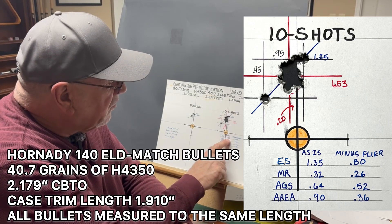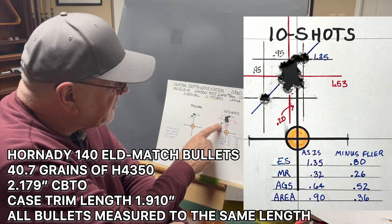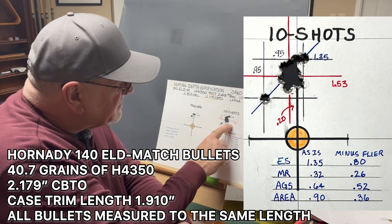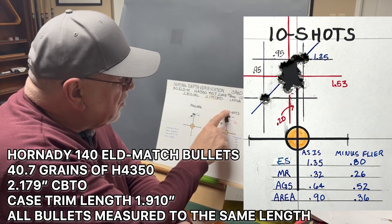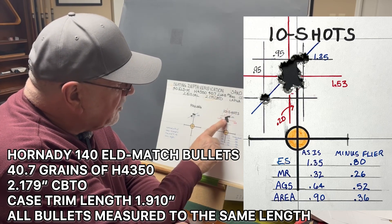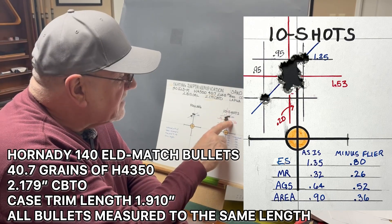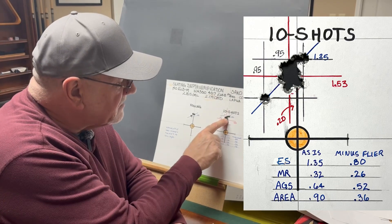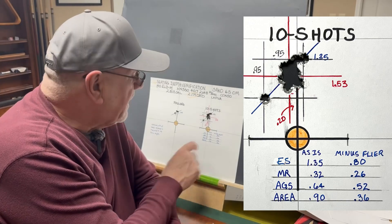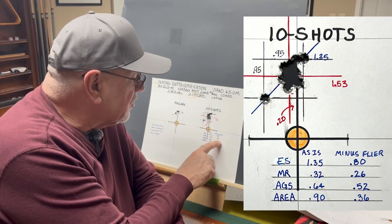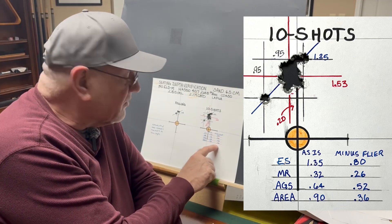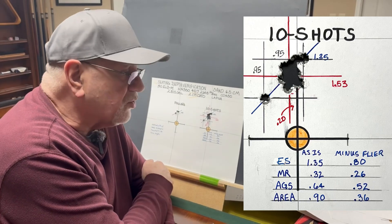I had an extreme spread of 1.35 because of this flyer right here but as you can see here every one of these shots are touching in one single cluster. Minus the flyer the group had a size, and there was one here off to the side. Minus the flyer the group had a size of 0.8 inches, a mean radius of 0.26 and it covered an area of 0.36 inches.